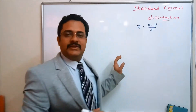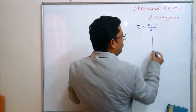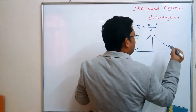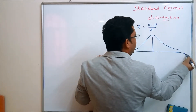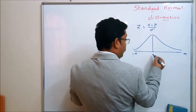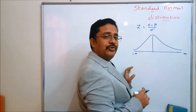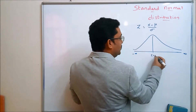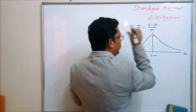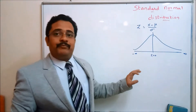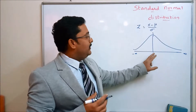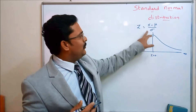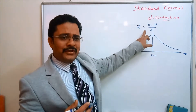As we discussed in the earlier class, this is the normal distribution. Let's recall — it extends from minus infinity to plus infinity. This is the standard normal distribution, and hence the variable is Z over here. Z is equal to 0. Now, just think over it: when can we get Z equal to 0 from here?